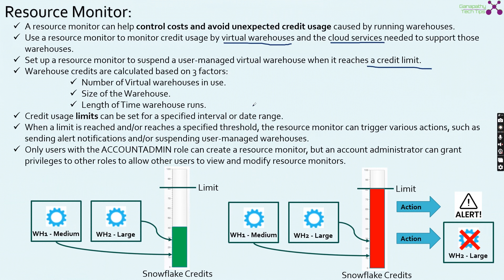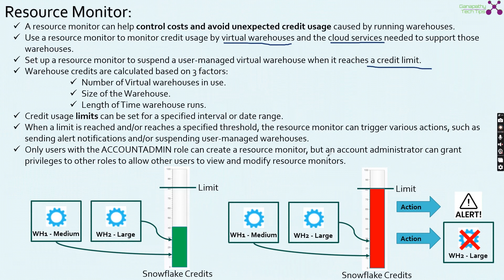It can be set at a monthly level or daily level — the frequency setup we can do using the Resource Monitor. When a limit is reached or reaches a specific threshold, the Resource Monitor can trigger various actions such as sending alert notifications or suspending the user-managed warehouses. One important thing to note: the account admin role alone can create a Resource Monitor, but an account administrator can grant privileges to other roles to allow other users to view and modify the Resource Monitor as well.